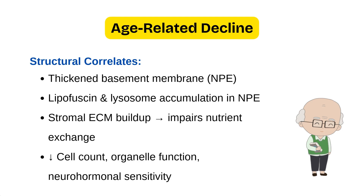Why does this happen? With age, there is thickening of the basement membrane of the non-pigmented epithelium, which affects ion exchange. There is also lipofuscin and lysosome accumulation, stromal extracellular matrix buildup impairing nutrient exchange, and reduced cell count, organelle function, and neurohumoral sensitivity.